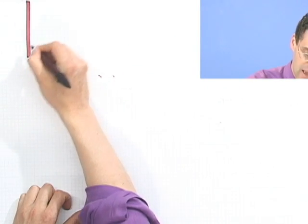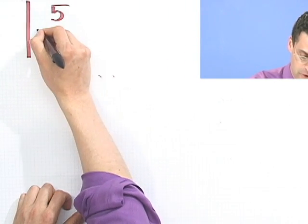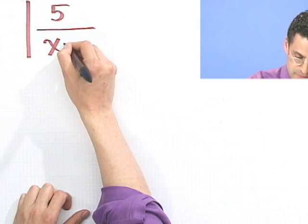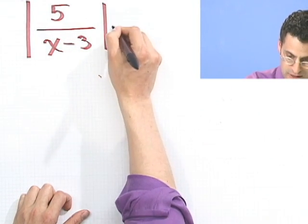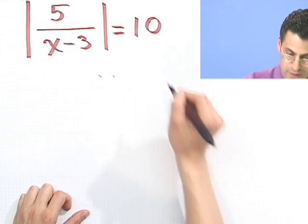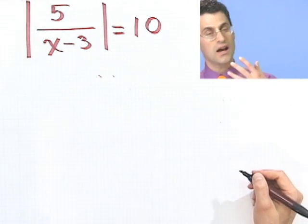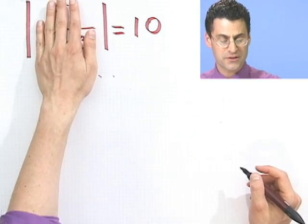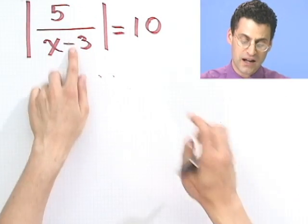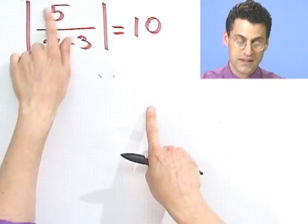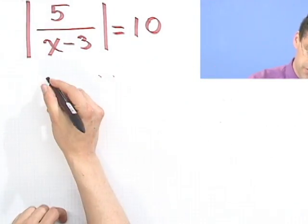Let's try another example. All right, look at this one. Absolute 5 over x minus 3 and absolute equals 10. How would you solve this? Again, the same idea. If I have the absolute value of something, that something either equals this, or that something equals negative this. So I set up two equations.